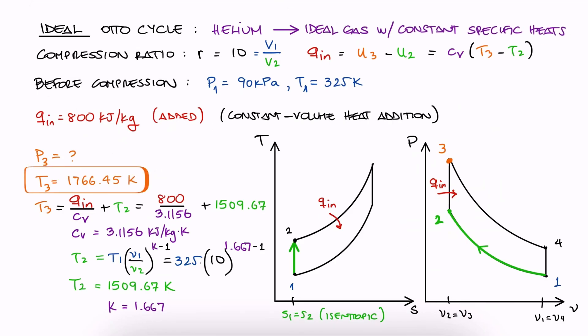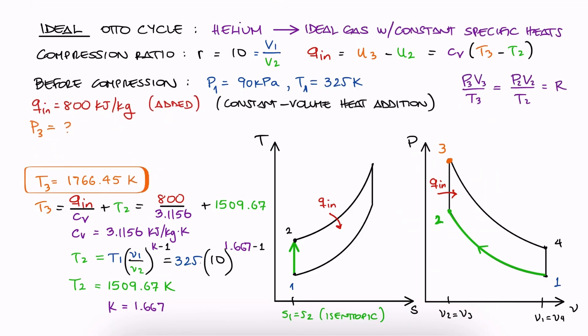Now for P3, since helium is an ideal gas, the most ideal of gases actually, and this heat addition process happens at constant volume, we can solve for P3 in terms of P2. What we're missing here is P2.